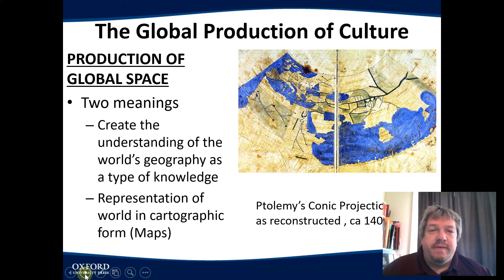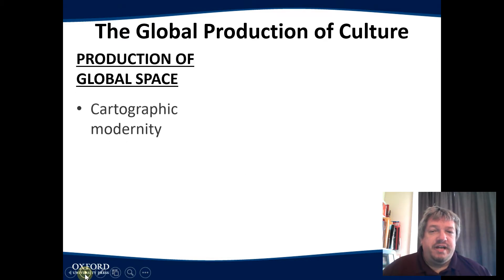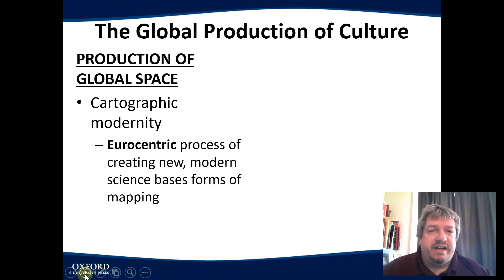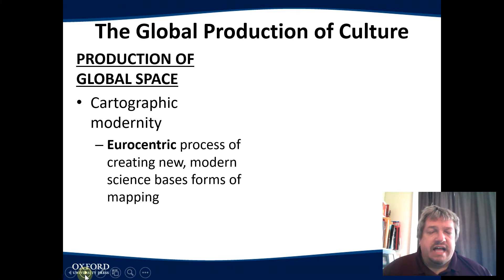The other aspect of the global production of culture — once we have geography established as a way to measure this — is the production of global space. This leads into the idea of cartographic modernity, this idea of the Eurocentric process: that using scientific-based forms of mapping, very Eurocentric in form, are the basis of our knowledge of culture in space.